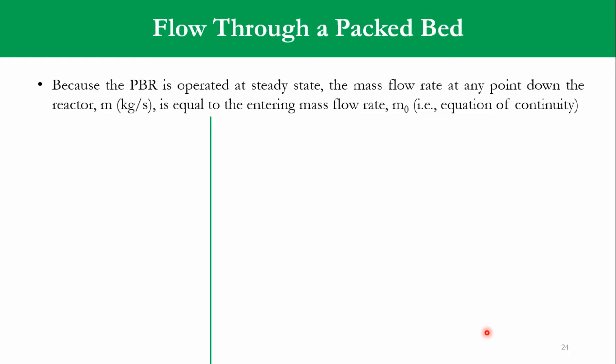Once we have designed the packed bed reactor and developed the design equation, we said it is operated at steady state. Accordingly, steady state means that the mass flow rate at the inlet or at any point down the reactor is equal to entering mass flow rate, such that equation of continuity. So we can say M is equal to M0, accordingly M is ρV, so ρV and that goes for ρ0V0. Accordingly, we know V is equal to V0 P0 over P times T over T0 times FT over FT0.